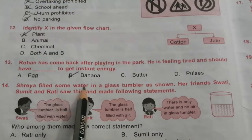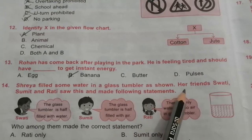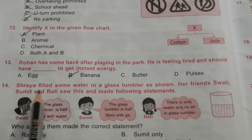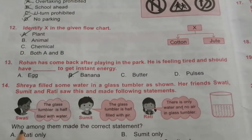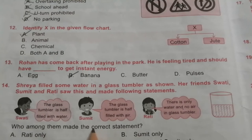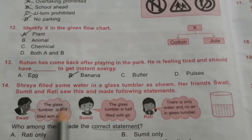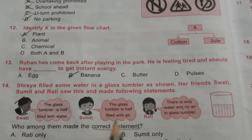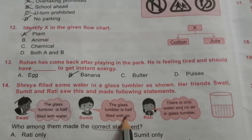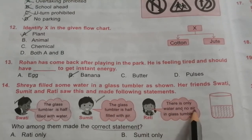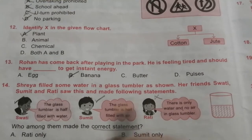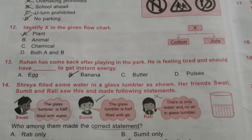Question 14: Shreya filled some water in a glass tumbler. Her friends Swati, Sumit, and Rati made statements about it. Swati said the glass tumbler is half filled with water — correct. The glass tumbler is also half filled with air — also correct. Rati said there is only water and no air — this is wrong. The answer is D: both Swati and the second statement are correct.